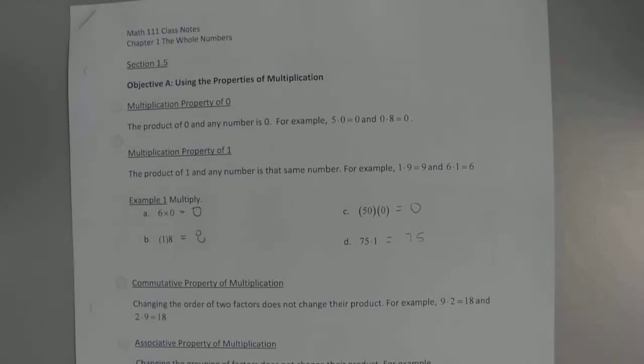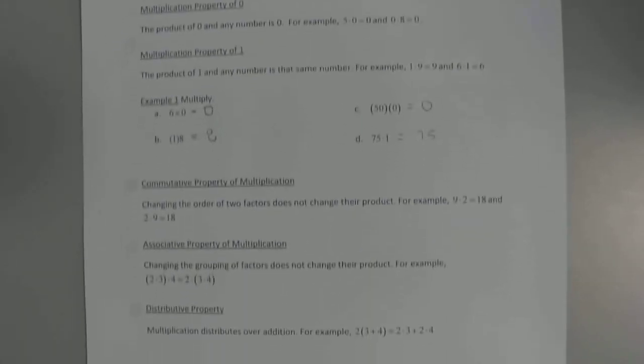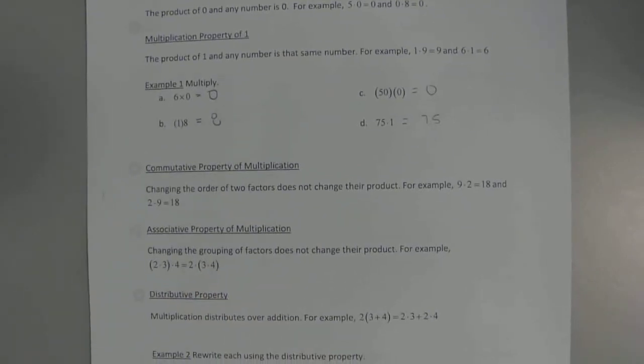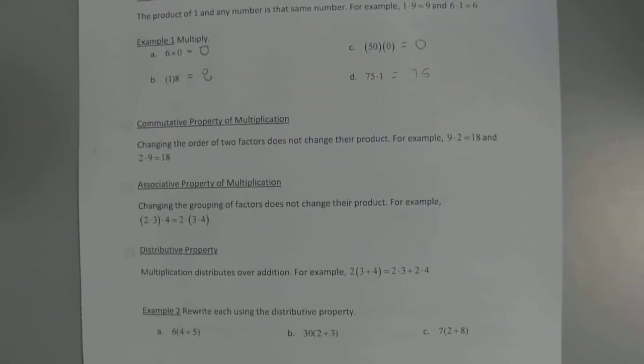The next one is the commutative property of multiplication. It's just like addition. It doesn't matter which way you multiply, you're going to get the same answer. So nine times two is 18, and two times nine is 18 as well. The whole idea there is that it's repeated addition, so addition can go both ways, so can multiplication. Associative property, same idea. It doesn't matter who we multiply first.